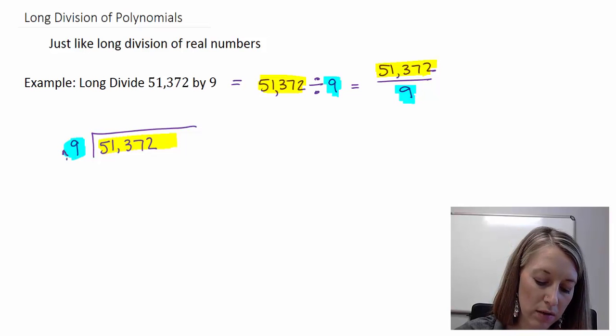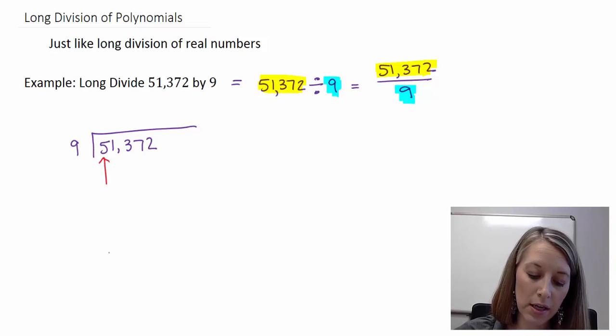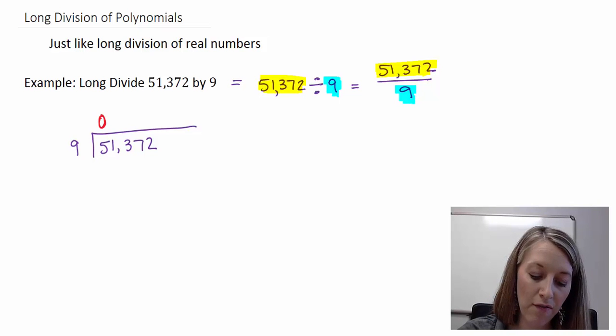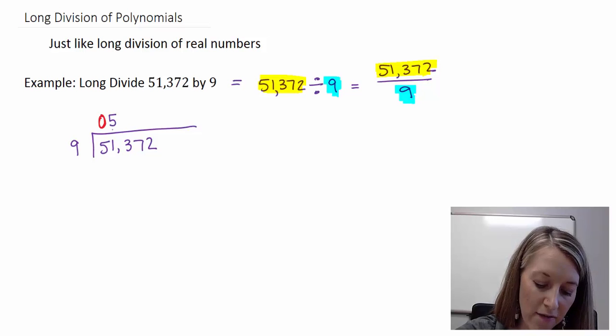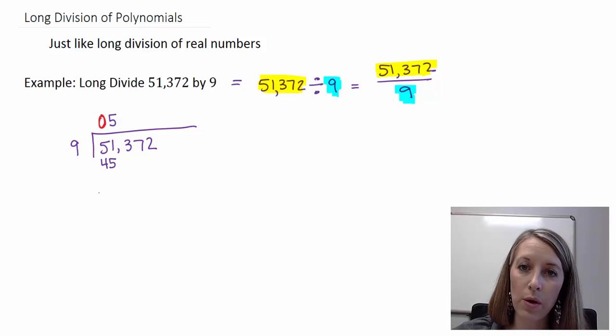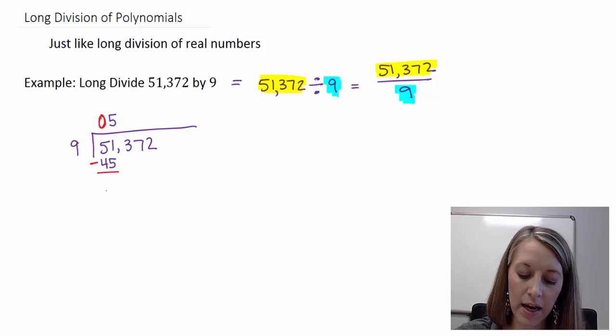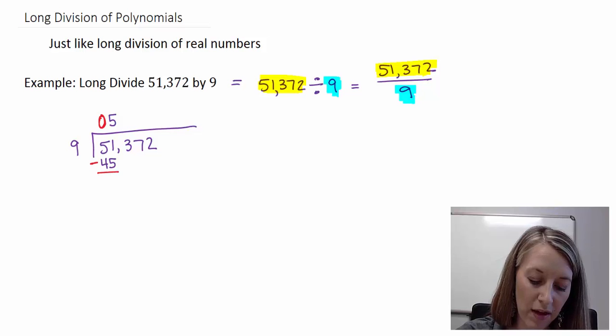To review my long division process, the first thing that we do is we have to figure out what does 9 go into. Does 9 go into my first digit? It does not. We might put a 0 here as a placeholder. Does it go into my next two digits altogether? And yes, 9 does go into 51. Not evenly, but it does go into it. 9 goes into 51 5 times, because 9 times 5 gives me 45. That's the way we do it. We figure out how many times it goes in up here. We multiply them. 9 times 5 gives me 45. And then we subtract them to move on to the next step. 51 minus 45 gives me a 6.